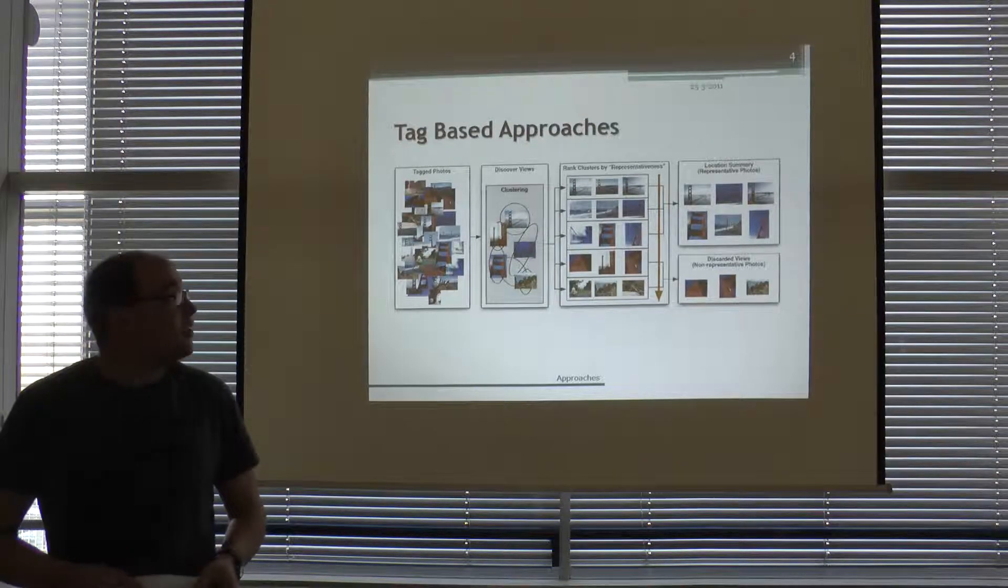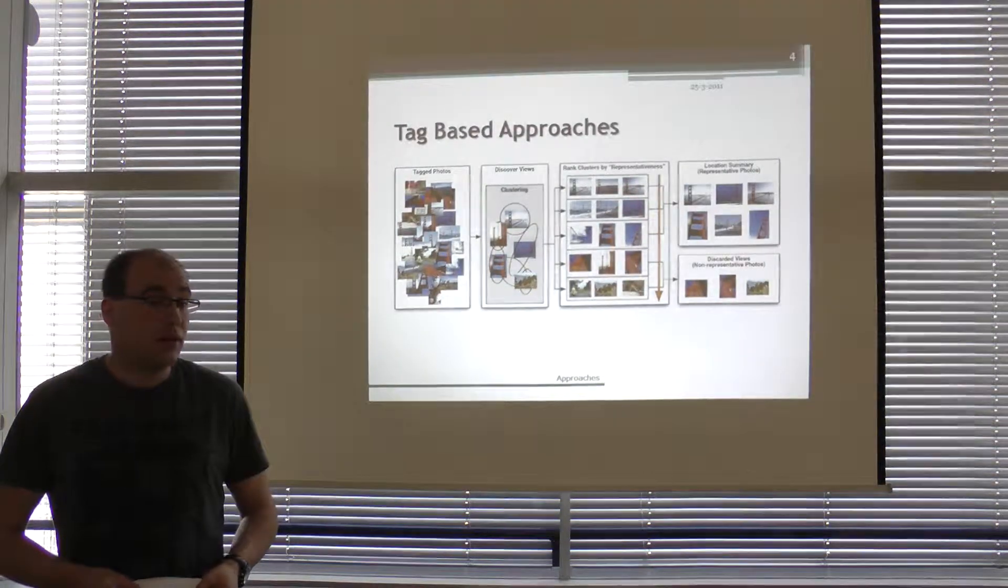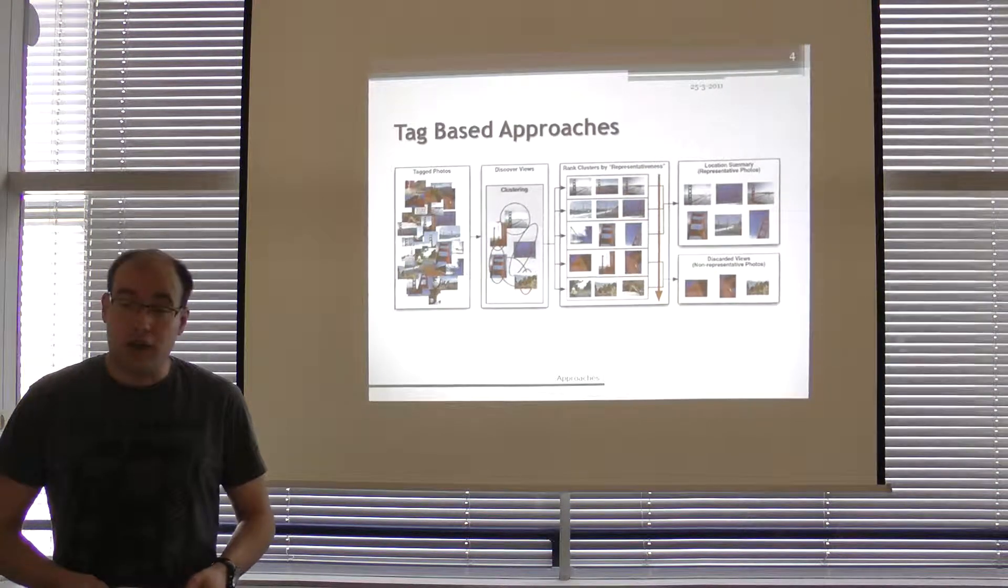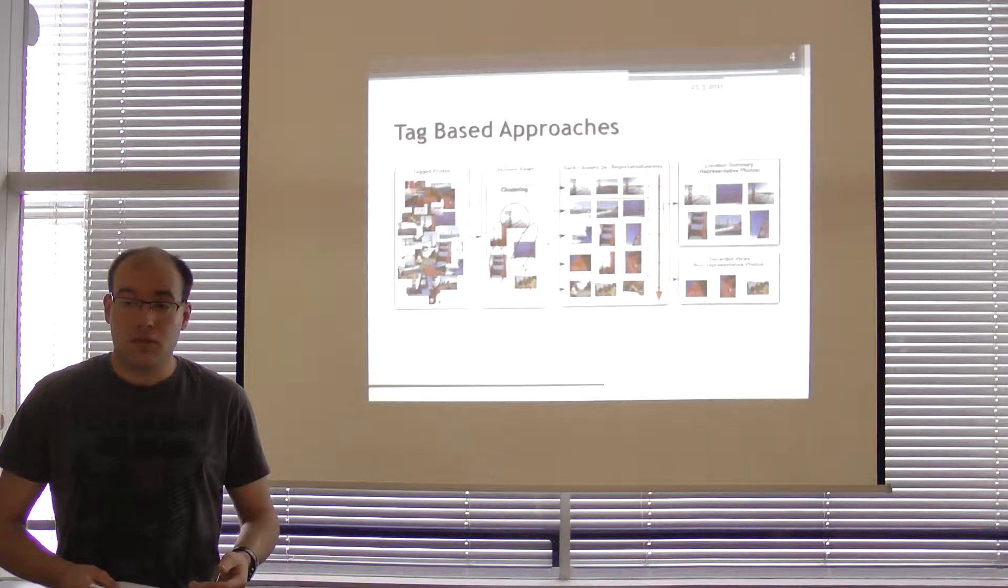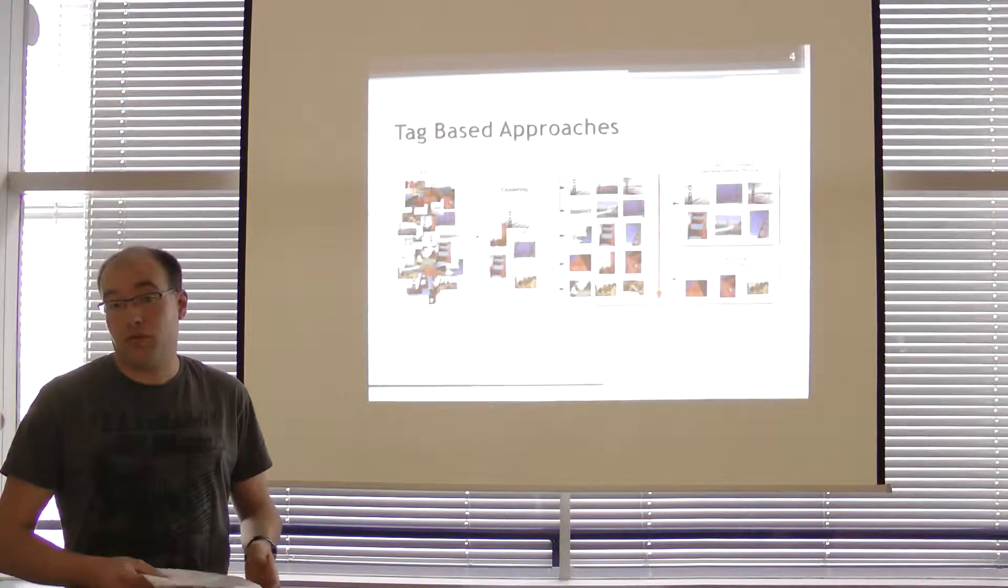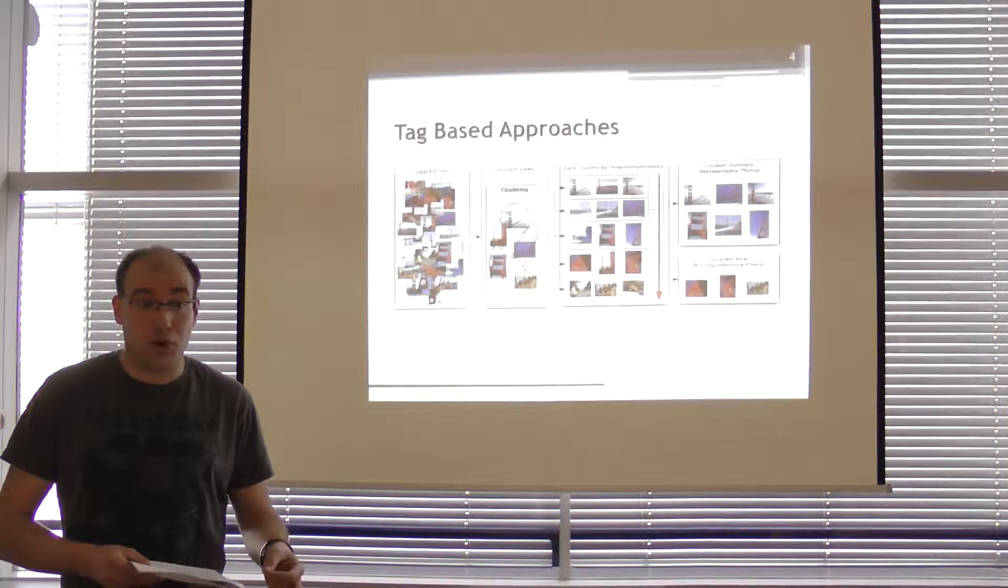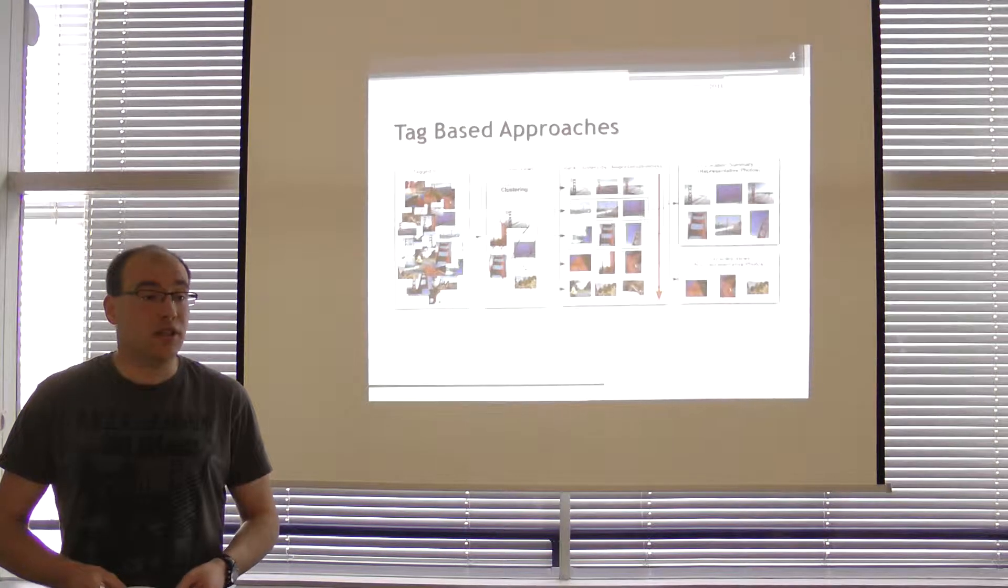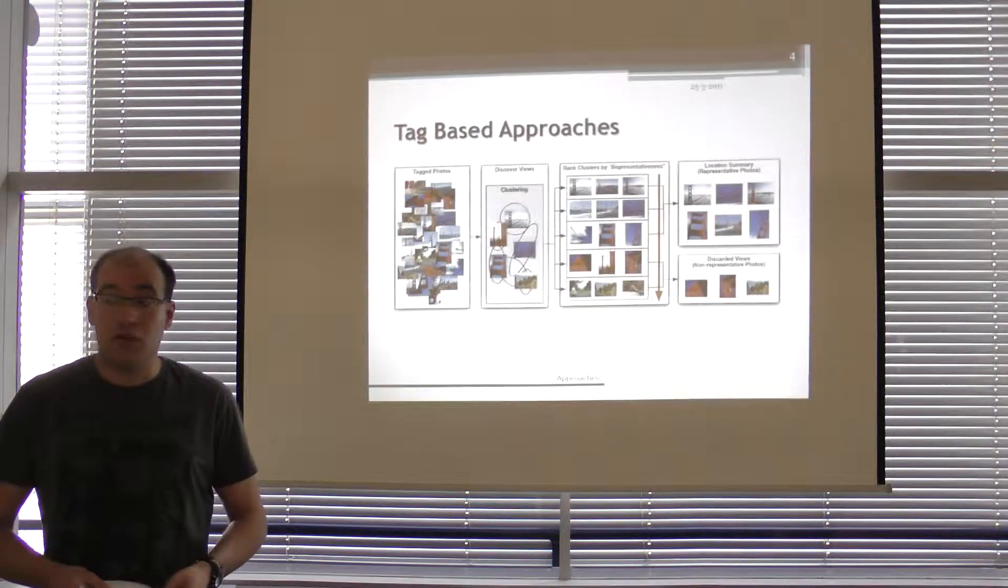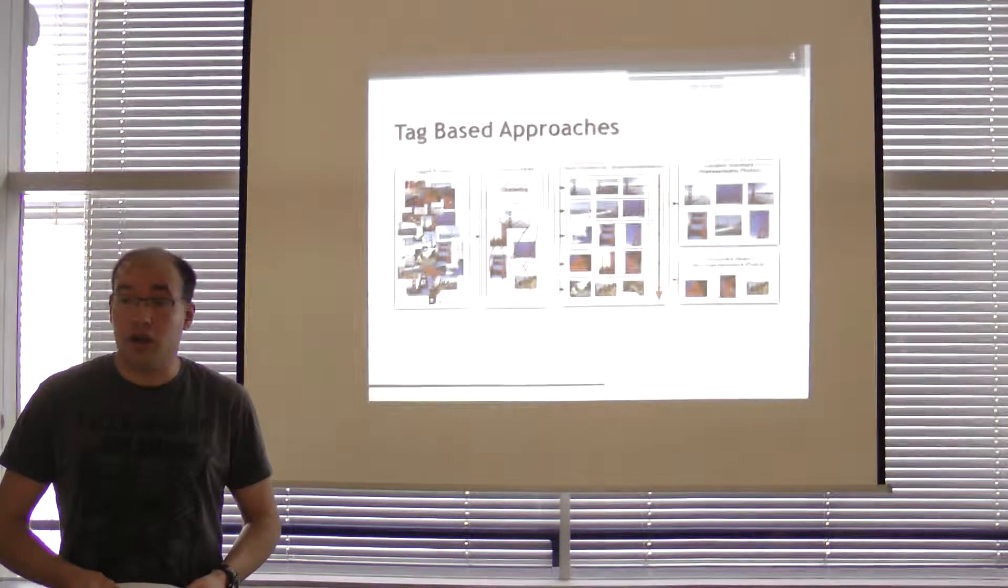Based on the tags and visual features the images can be clustered in accordance to their importance. But the nice thing here is that also the clusters can be re-ranked on the basis of for example how many different users have used similar tags for similar visual content. And this might improve for example which viewing points are apparently very important for the users.